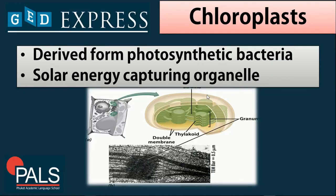Next we have the chloroplast. This is one of the most essential organelles in plant cells. It is derived from photosynthetic bacteria and is the solar energy-capturing organelle of the plant cell. This is where photosynthesis takes place.